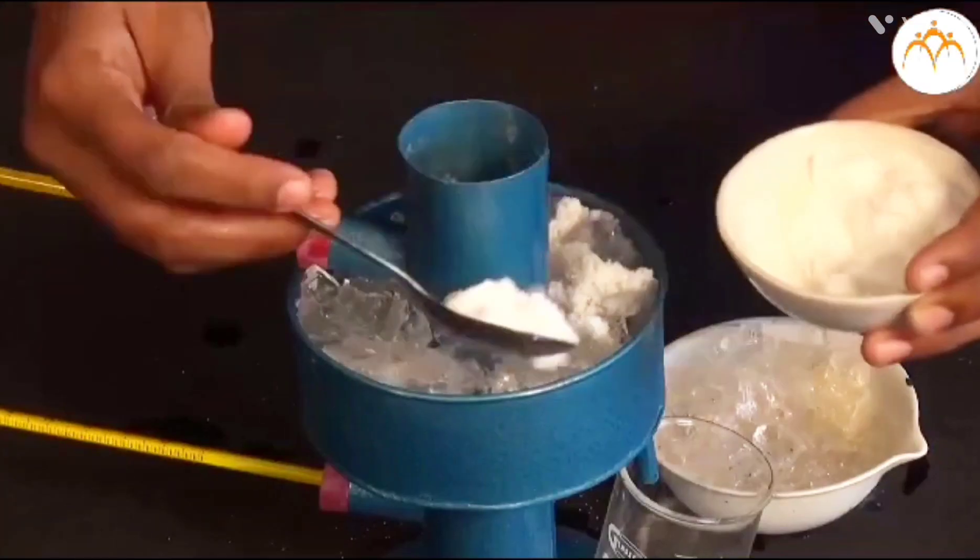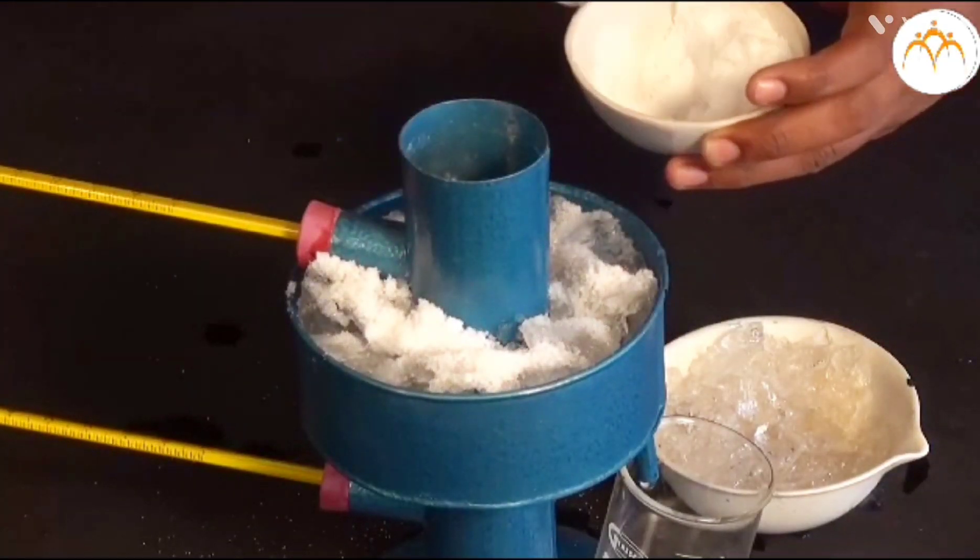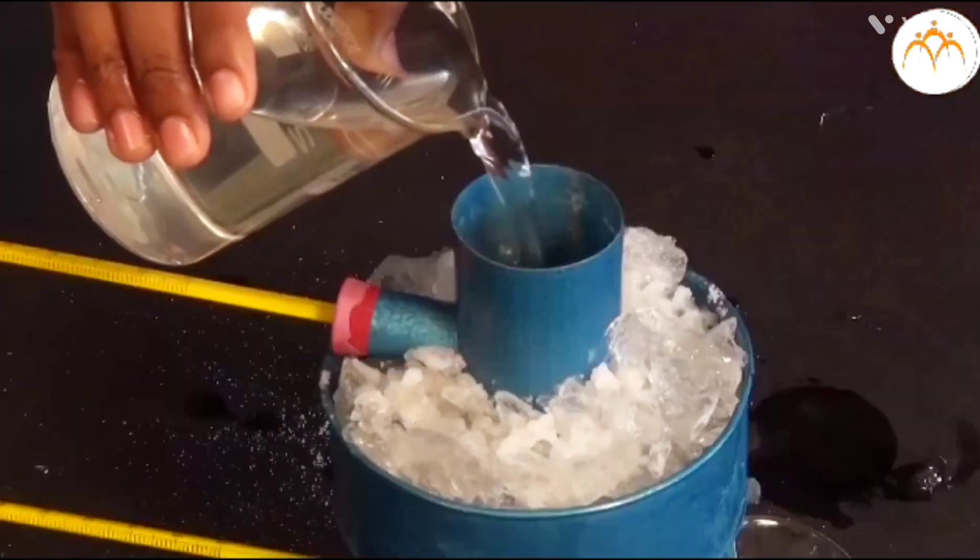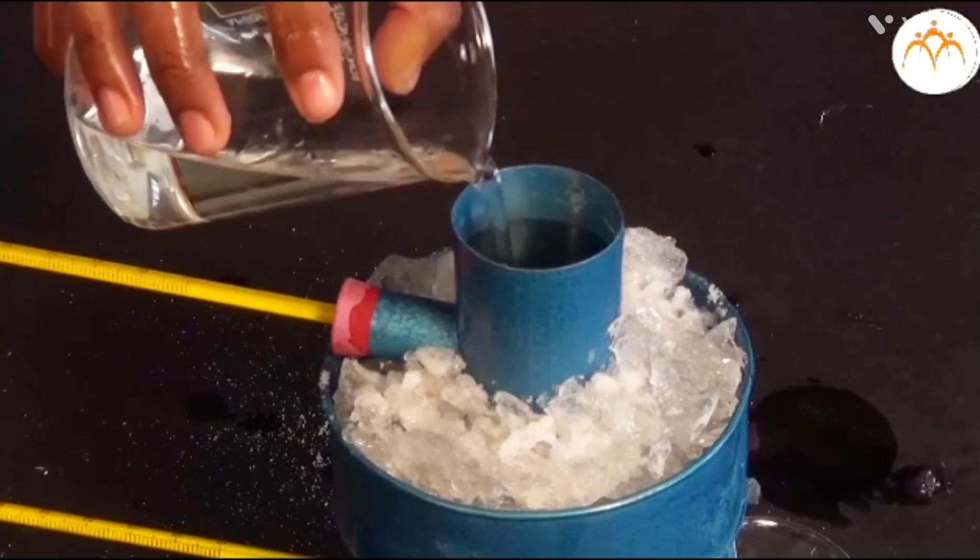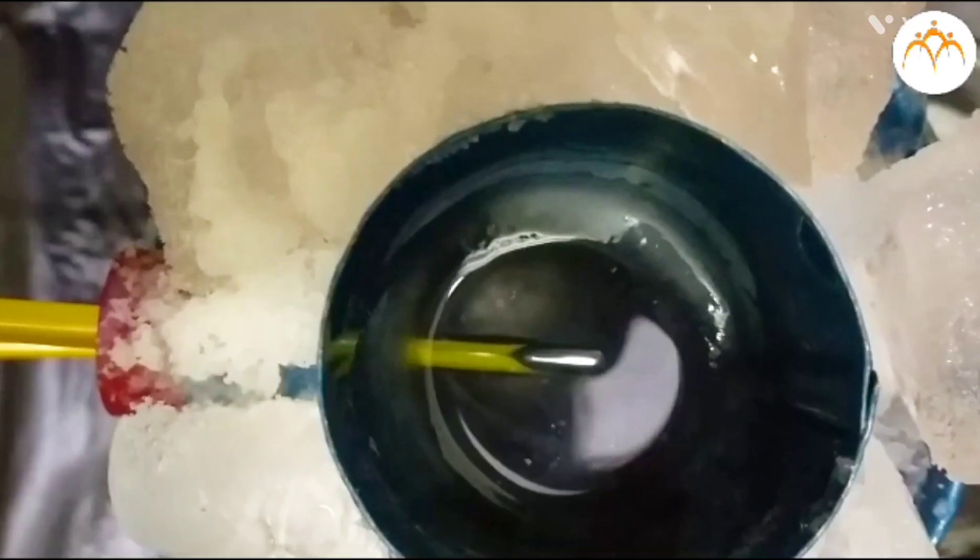We fill the outer container with the freezing mixture of ice and salt. We fill water in the inner cylinder. Use cold water 10 to 12 degrees centigrade temperature in the inner cylinder.